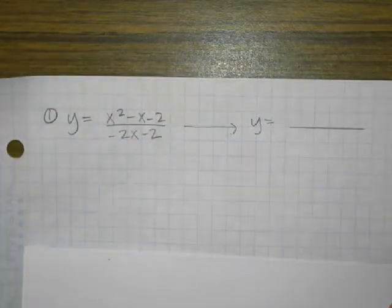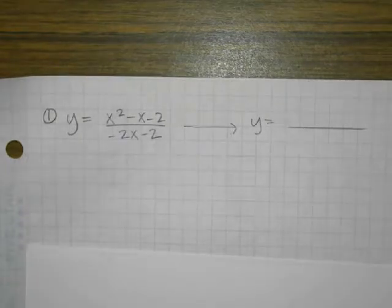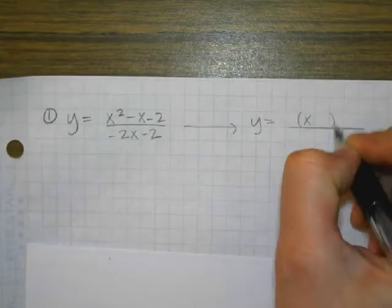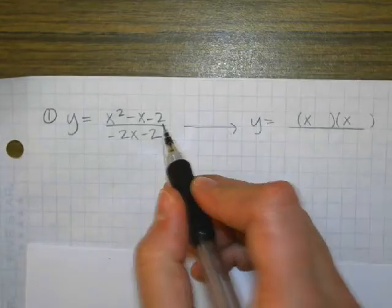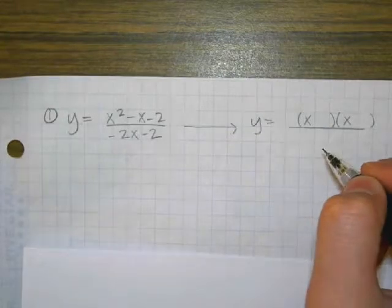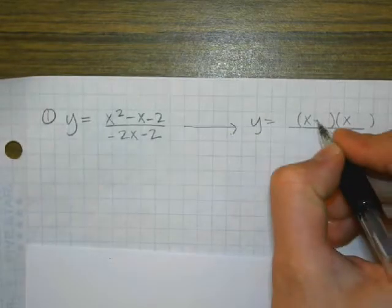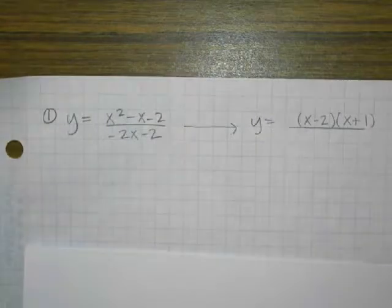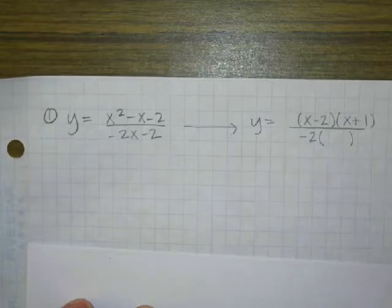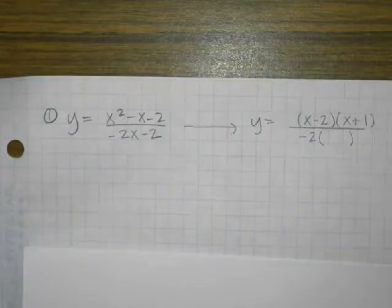So how do I factor the top? What would the top be if you factor it? X minus 2. So X minus 2 times X plus 1. And then how do we factor the bottom? Take out the GCF of negative 2, and what would be left? X plus 1.